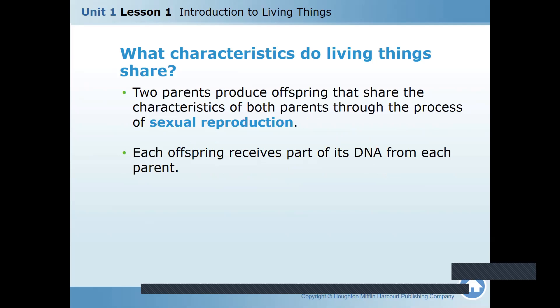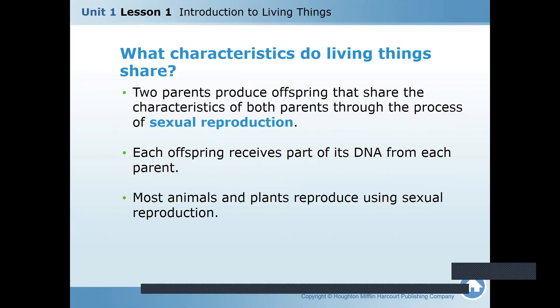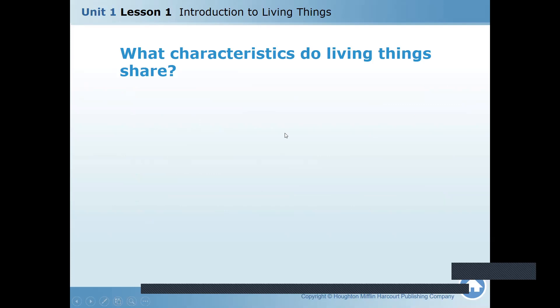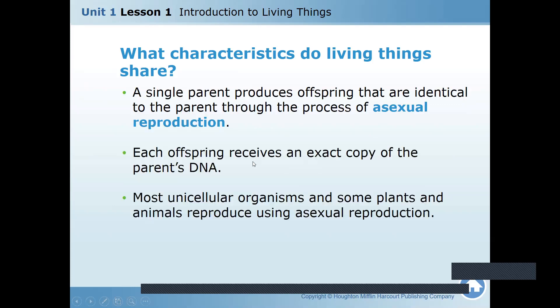If it's two parents, it is called sexual reproduction. Each offspring receives part of its DNA from each parent. Most animals and plants reproduce using sexual reproduction. When I say single parent, it is asexual — they get an exact copy. With two parents, they are similar because they get DNA from both of them. The offspring with a single parent is asexual; the offspring with both parents is sexual.